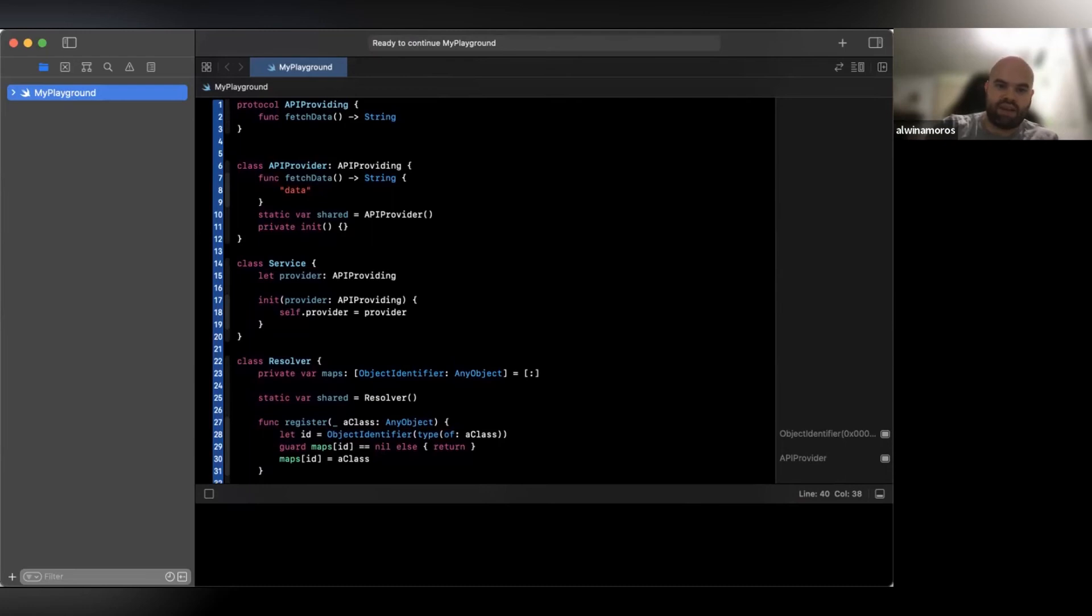And we conform by API providing by returning a given string data and make it a singleton. Now we have another class called service.